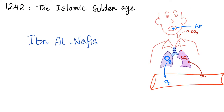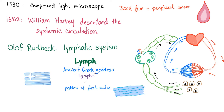Fast forward to the Islamic golden age. Ibn al-Nafis discovered the pulmonary circulation — we discovered the pulmonary circulation before the systemic circulation. The fact that blood goes in circles was something very new and extraordinary for people at that age. Then in 1590, we discovered compound light microscopy, and we were able to see peripheral smears under the microscope. The Americans call it a peripheral smear; the British call it the blood film.